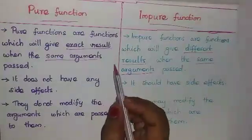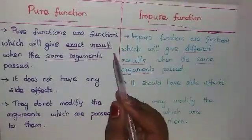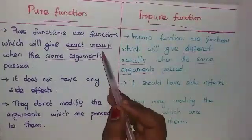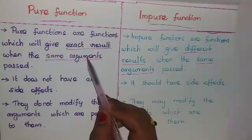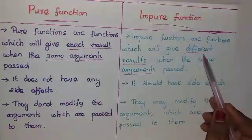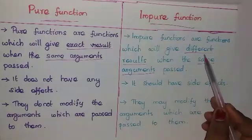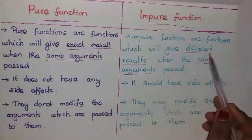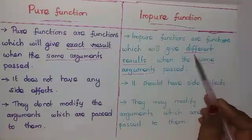For a pure function, every time you call the function with the same arguments, you will always get the same result. For an impure function, every time you call the function with the same arguments, you will always get a different result.